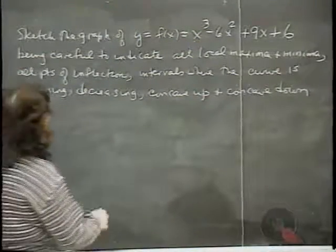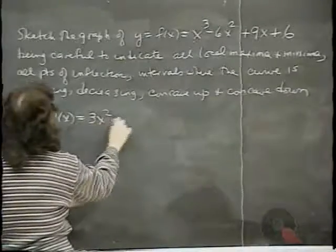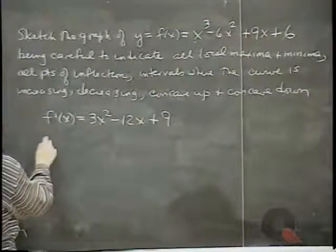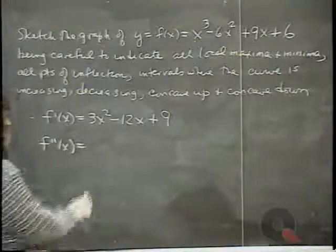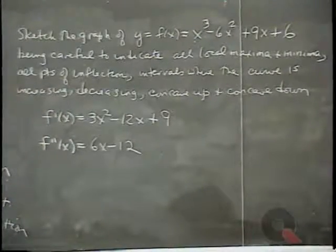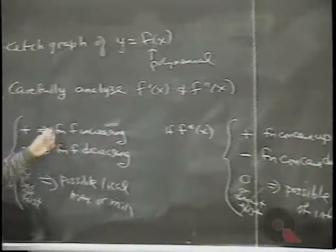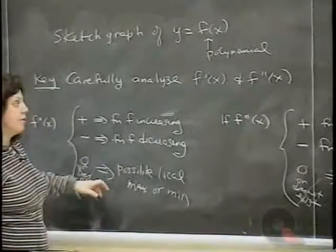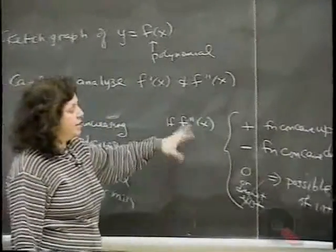Let's find our first derivative: f prime of x equals 3x squared minus 12x plus 9, taking the derivative with respect to x. Our second derivative is 6x minus 12. Now we're going to analyze these derivatives — finding where the first derivative is positive, negative, or zero to determine increasing, decreasing, and possible local max or min.